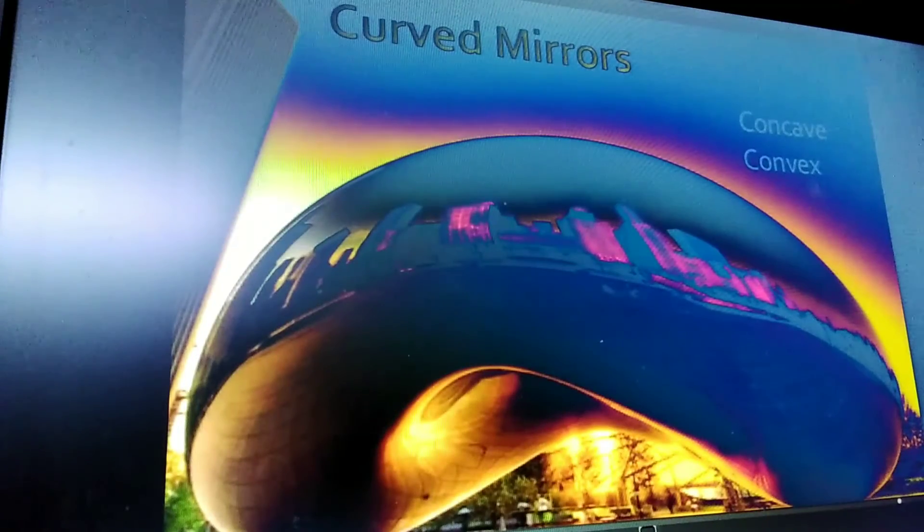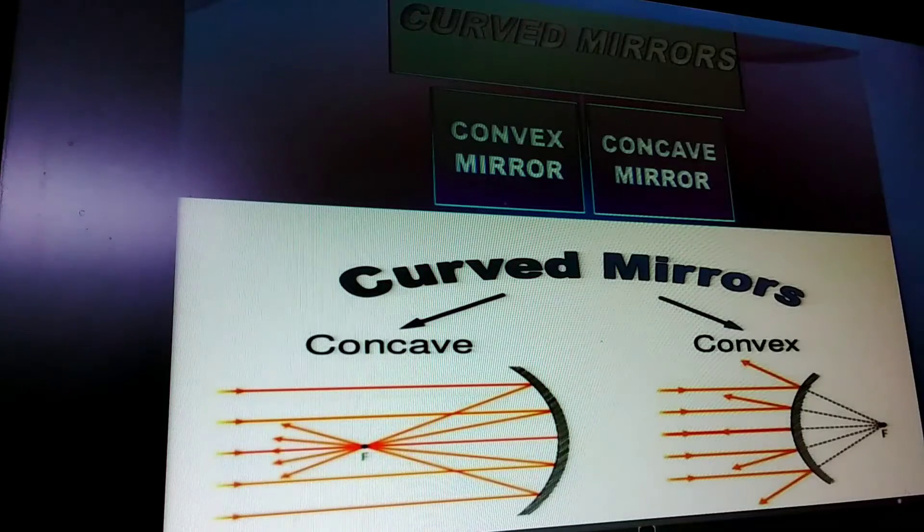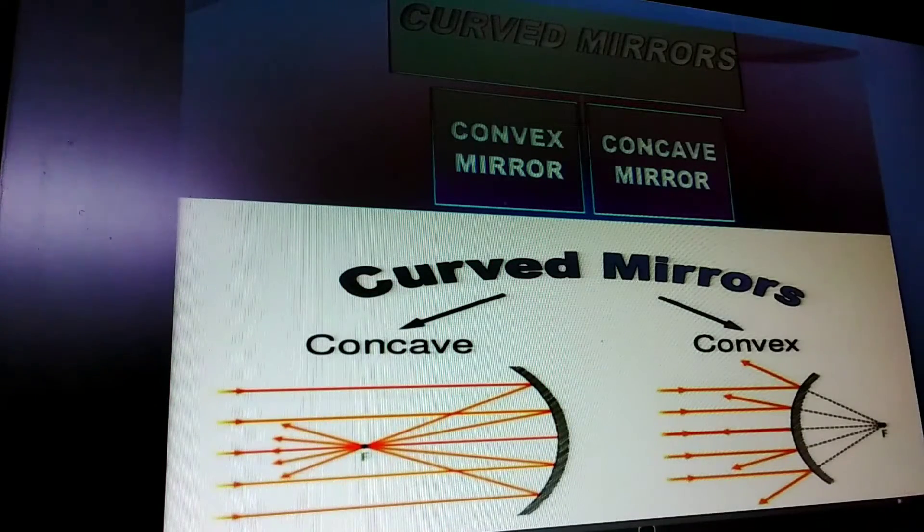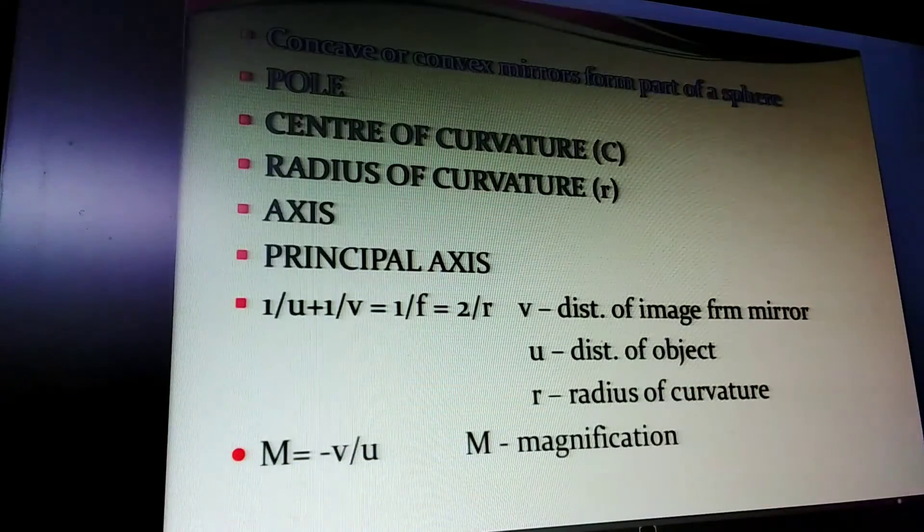Now coming to curved mirrors—concave and convex. If the reflector is curved inward, it is a concave mirror. If the reflector bulges outward, it is called a convex mirror.